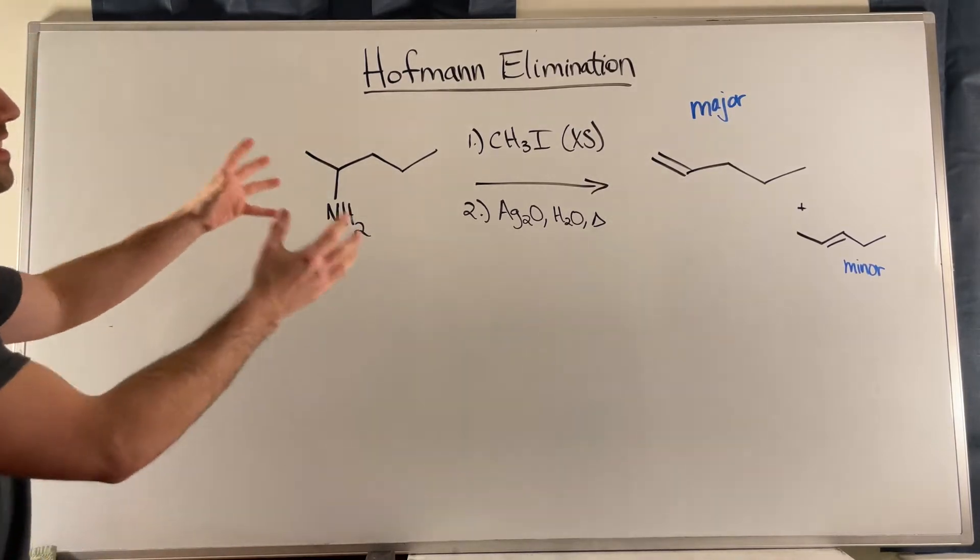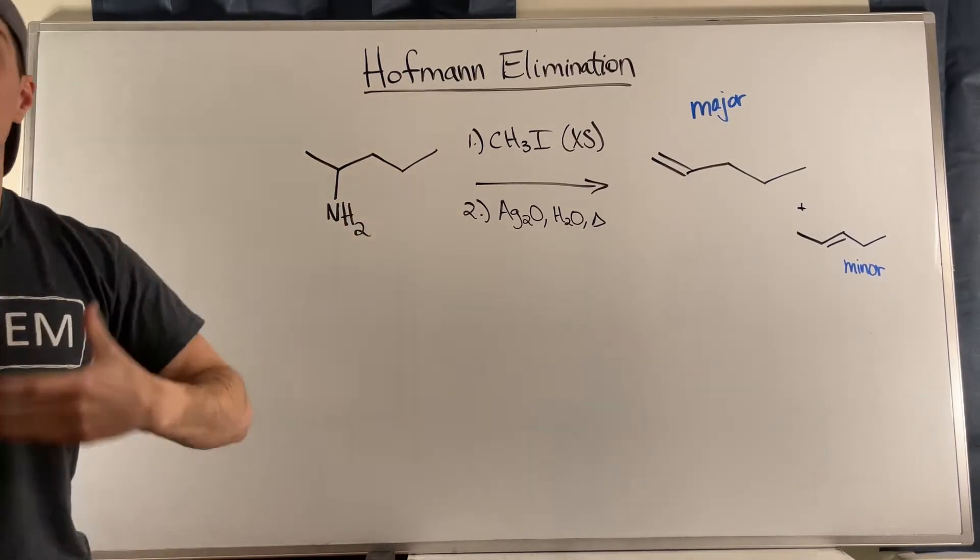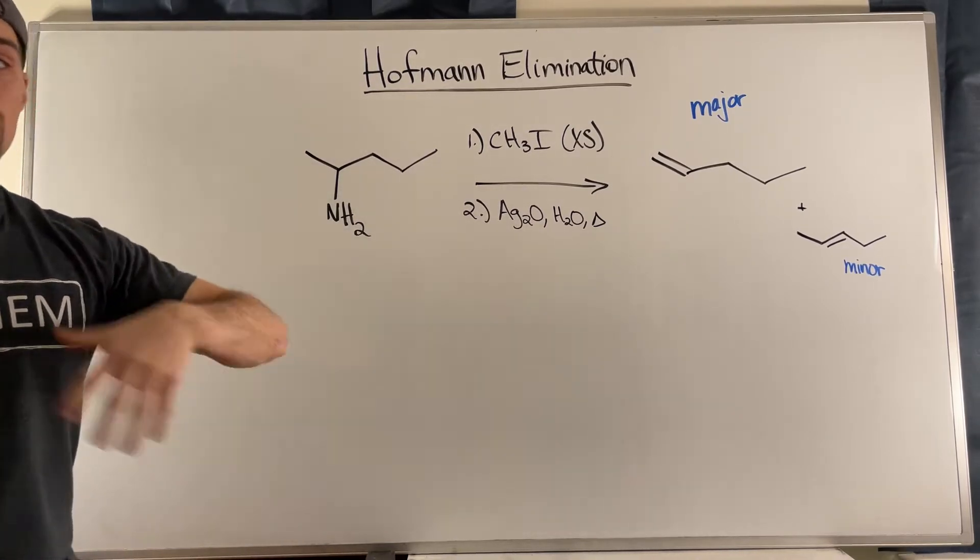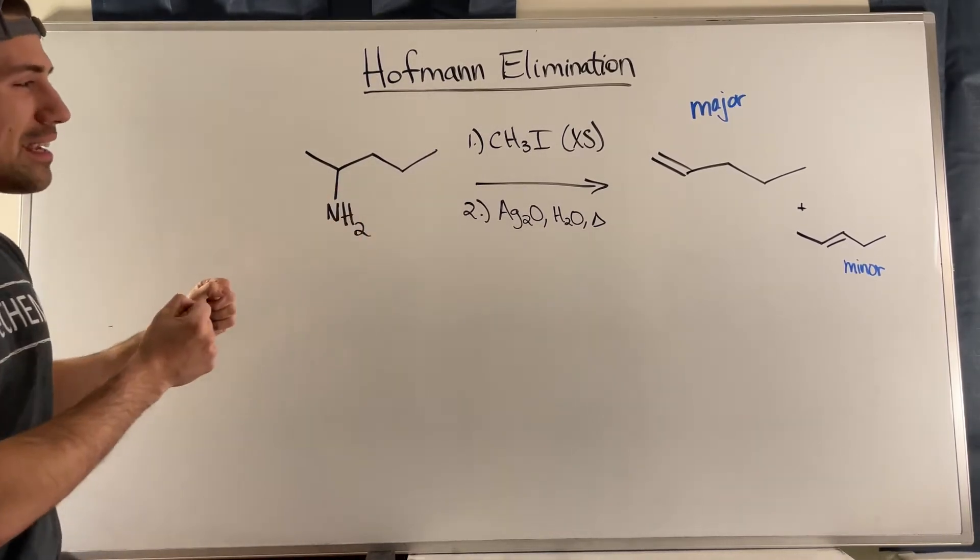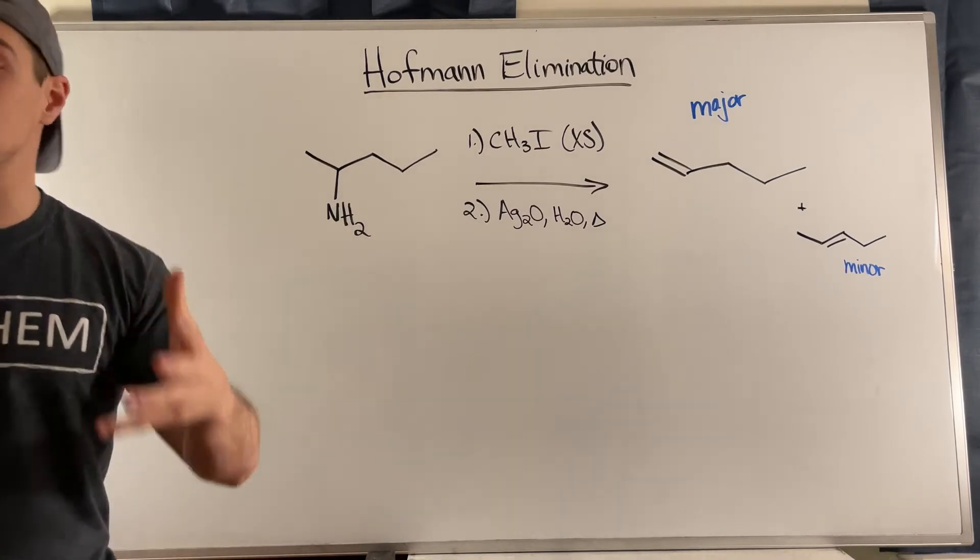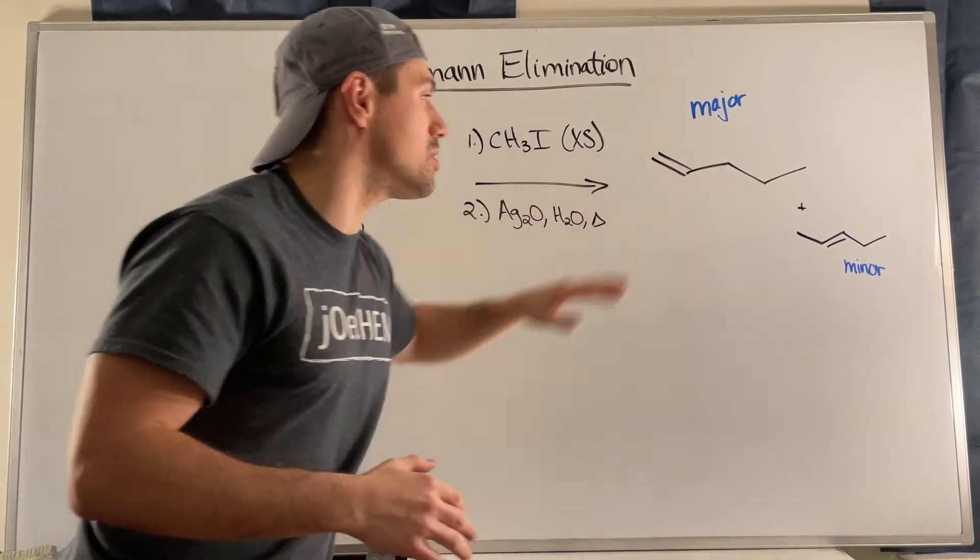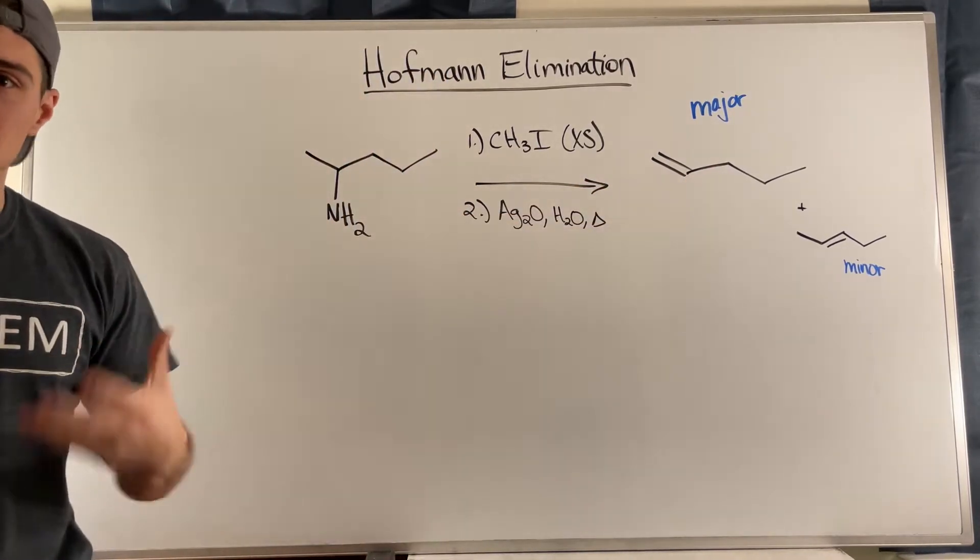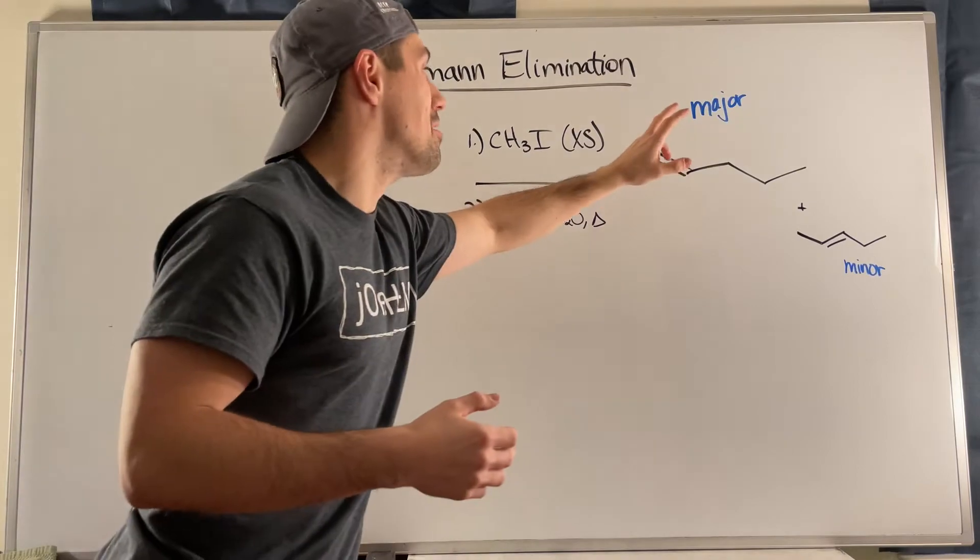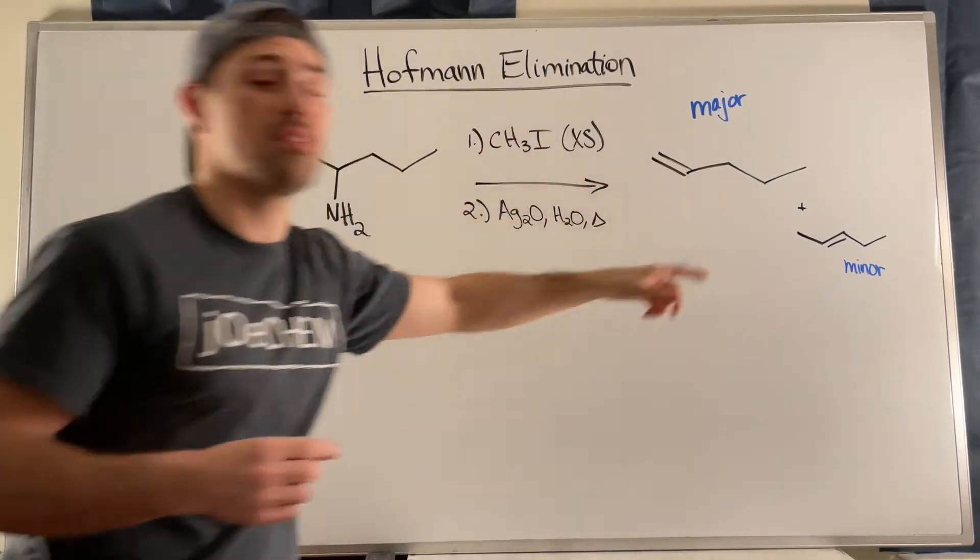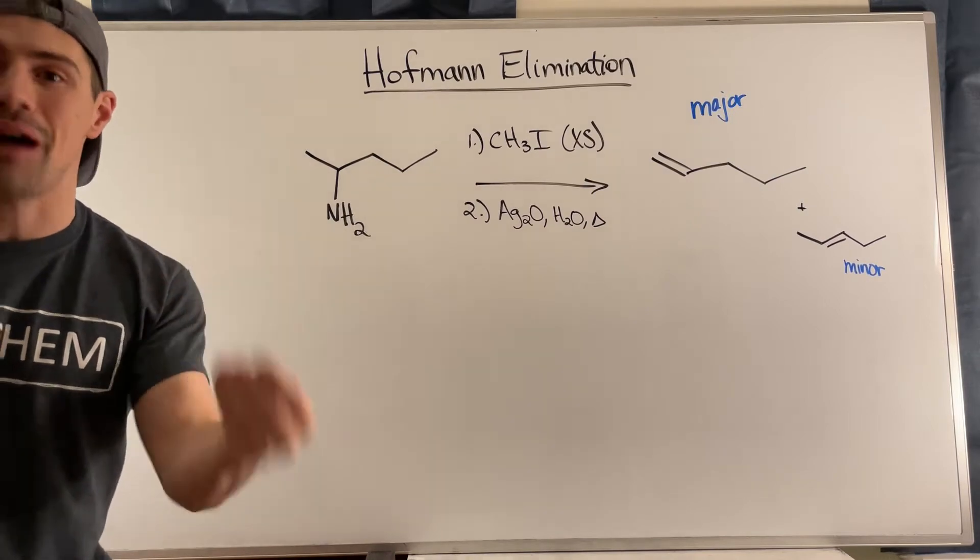Well, we are revisiting that concept here today in discussing the Hofmann elimination when you're talking about amines as your leaving group. So we'll just dive right into it. There's not so much mechanism here. I kind of want to justify and explain why you get the less substituted double bond as your major product for these reactions versus the more substituted double bond as your minor product.